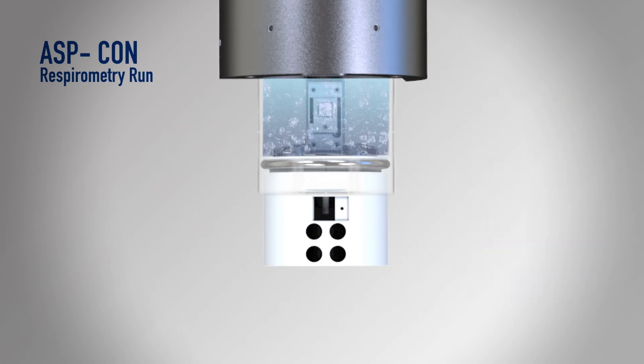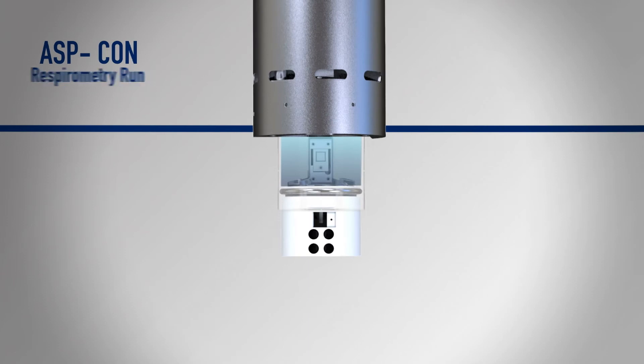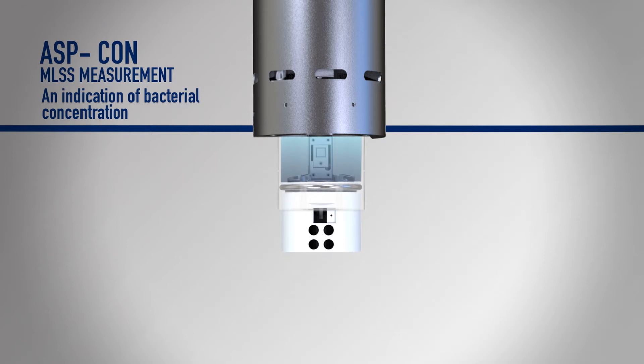From here, two different actions can then be performed. Firstly, to carry out a mixed liquor suspended solids measurement, the sample is pushed up past the sensors by raising the core and sample exhausts through slots in the outer casing.